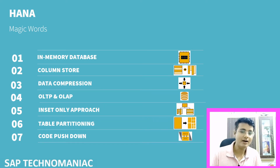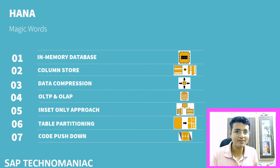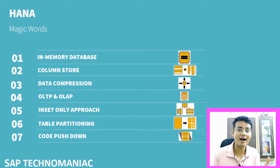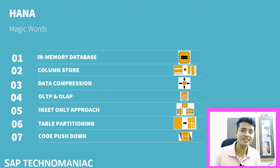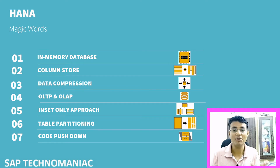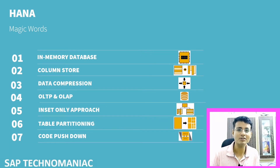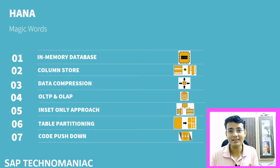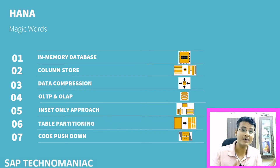We have learned about most of the magic words applicable in ABAP on HANA. Last but most important magic word, especially for ABAPpers, is code push down. What is code push down? Some people say 'code to data paradigm.' We will see what it is in this video. Let's get started.